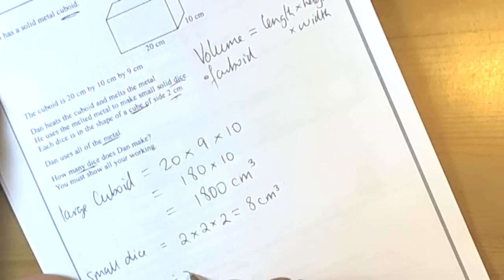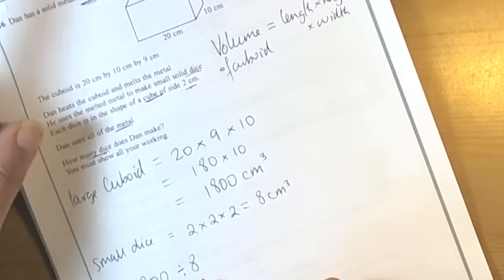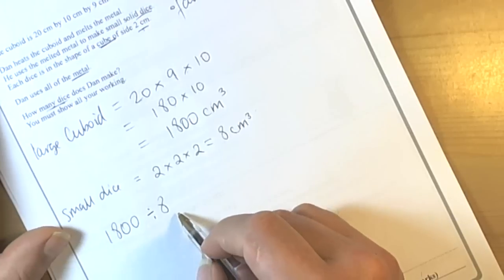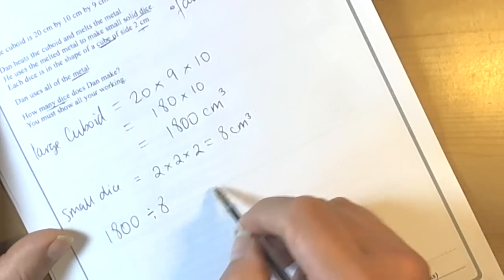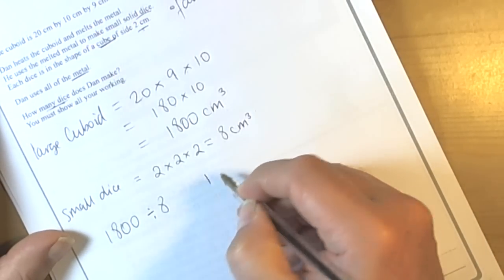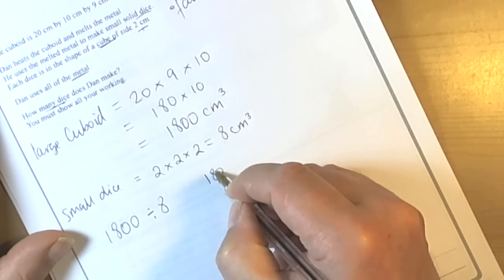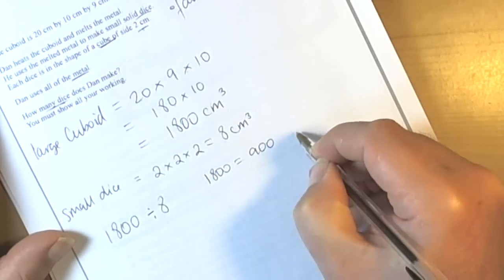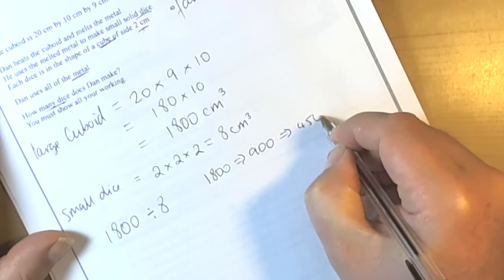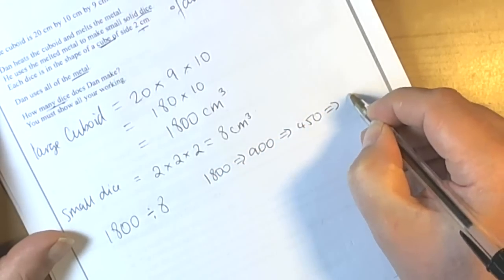Lots of ways of doing this. A quick way of dividing by 8 is to recognize that it's the same as halving and halving again and halving that again. So 1800 halved is 900, halve that is 450, halve that again is 225.